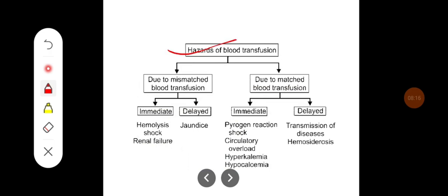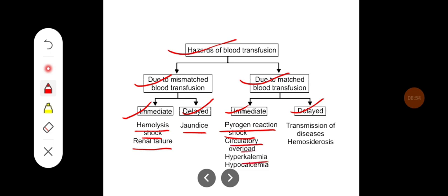Hazards of blood transfusion: complications due to mismatched transfusion include immediate effects such as hemolysis, shock, and renal failure, and a delayed effect of jaundice. Complications not due to mismatch include immediate manifestations such as pyrogenic reaction, shock, coronary overload, hyperkalemia, and hypokalemia, and delayed complications such as transmission of diseases and hemosiderosis.